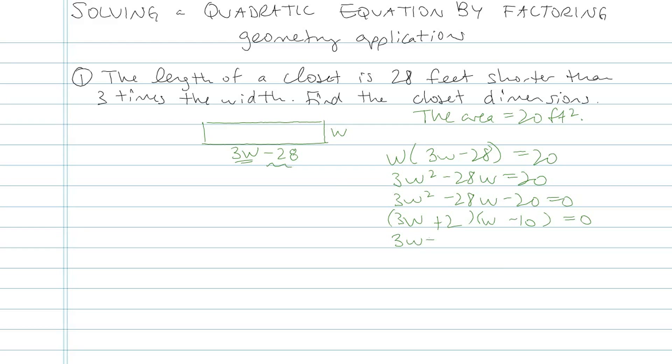Now that it's factored, using the zero product property, I'm going to set each parenthesis equal to zero to get my answers for w. w could be equal to negative two-thirds or positive ten, and this is where we talk about the context of the problem, like the real problem. The width of a closet could not be negative two-thirds feet. That doesn't make any sense. My algebra is all correct. I didn't make any mistakes. It's just that that answer doesn't make sense in the context of this problem.